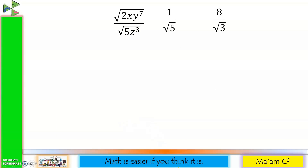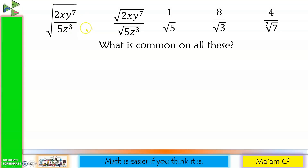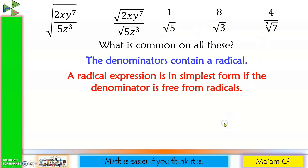Take a look at these expressions. What is common to all of them? Let's take this one — it is a radical that contains a fraction. And when we separate the numerator and the denominator, it will look like this. So these expressions have denominators that contain a radical. In mathematics, a radical expression is in simplest form if the denominator is free from radicals.